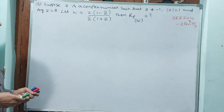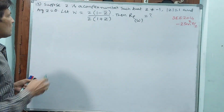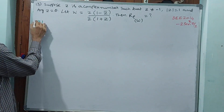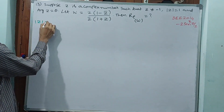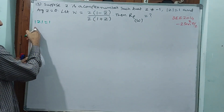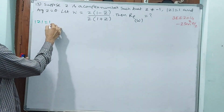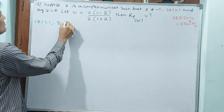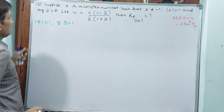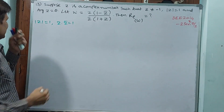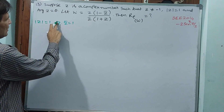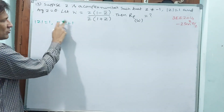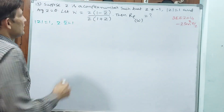Whenever modulus of Z is 1, we can write: Z times Z̄ equals 1, or Z̄ equals 1/Z, or Z equals 1/Z̄. This is a key property we will use.